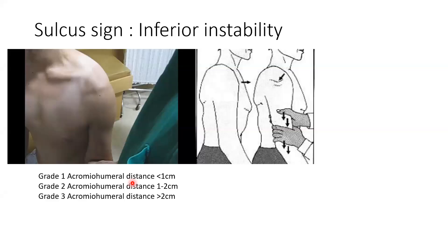The sulcus sign shows inferior instability. You pull down on the arm and apply a downward traction force to see the presence of the sulcus sign. Graded as: Grade 1 — less than 1 cm; Grade 2 — 1 to 2 cm; Grade 3 — more than 2 cm.